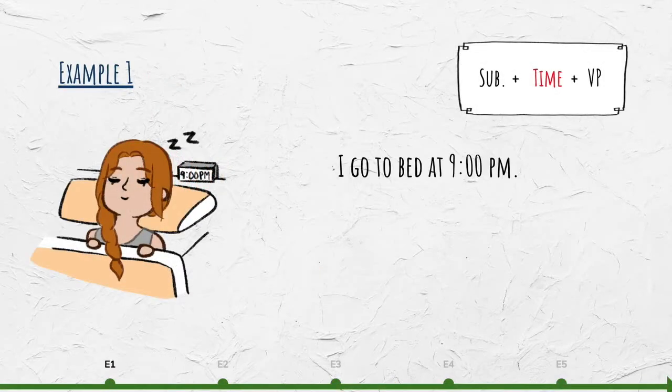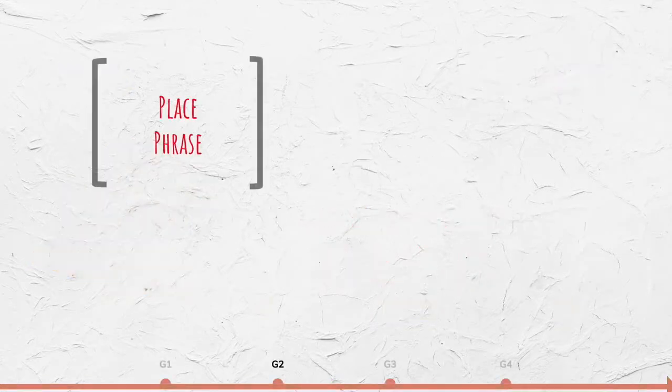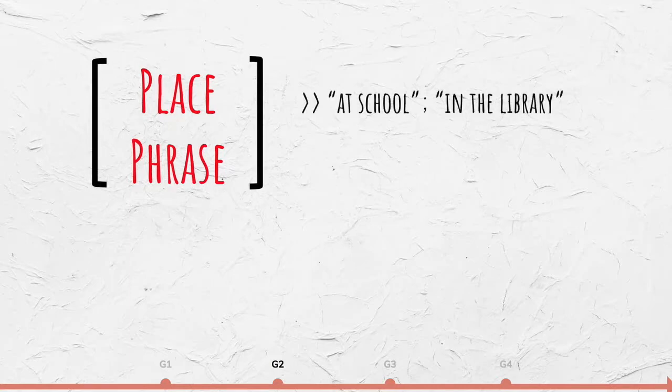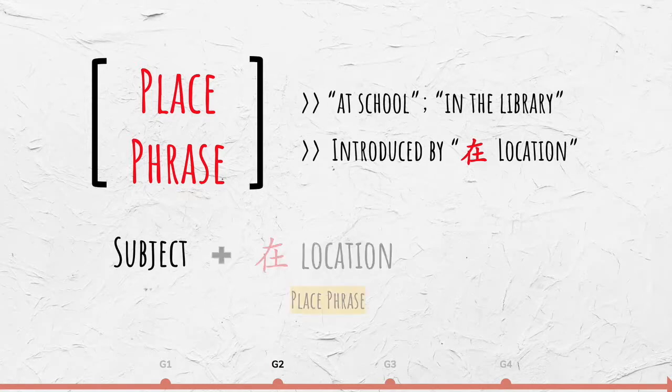For example, I go to bed at nine. 我晚上九点睡觉。A place phrase such as at school or in the library, always introduced by 在, is also placed before the verb. The structure is subject plus place phrase, always introduced by 在, plus verb phrase.